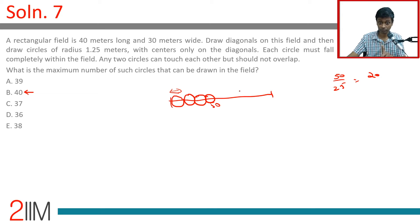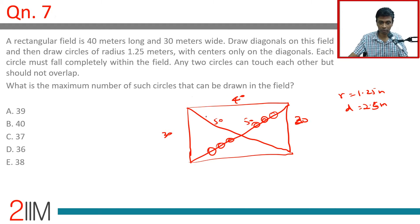However, the very crucial point - we are not just placing on the diagonal, we have to place on the diagonal keeping in mind that they do not overlap. If you draw 20 on this diagonal and 20 on this diagonal, the middle diagonals are going to eat into each other. There is an issue there.